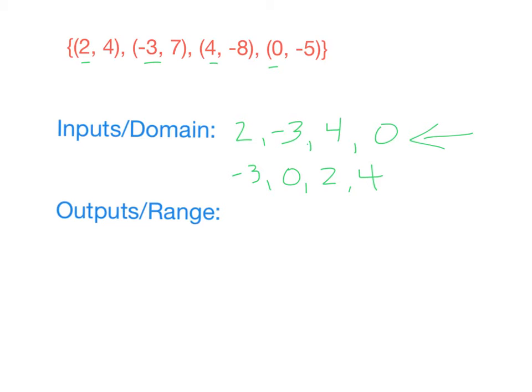Our range, the list of all of our outputs, we have 4, 7, negative 8, and negative 5. So 4, 7, negative 8, and negative 5. Again, listing this from least to greatest, negative 8 is the smallest value, then negative 5, 4, and 7. So that is what a domain and range is in a relation.